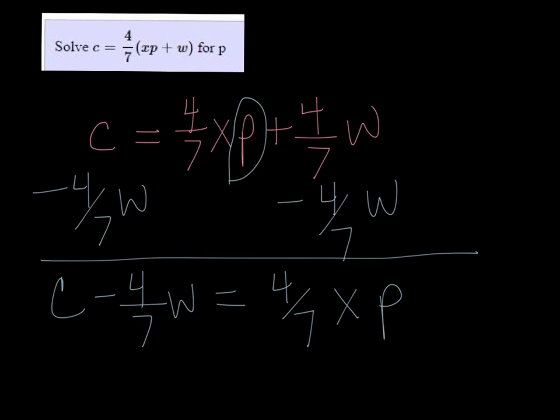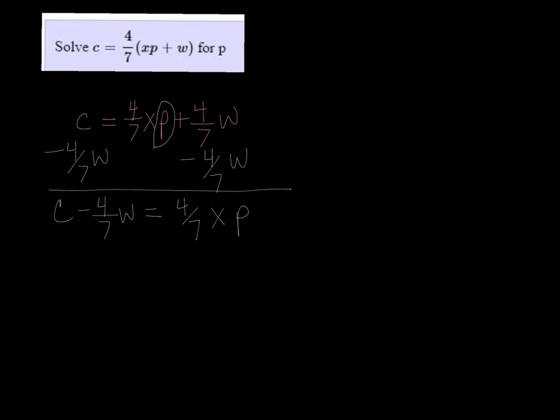Next, since we want p by itself, we need to get rid of the 4/7 x, so I want to divide 4/7 x on both sides.